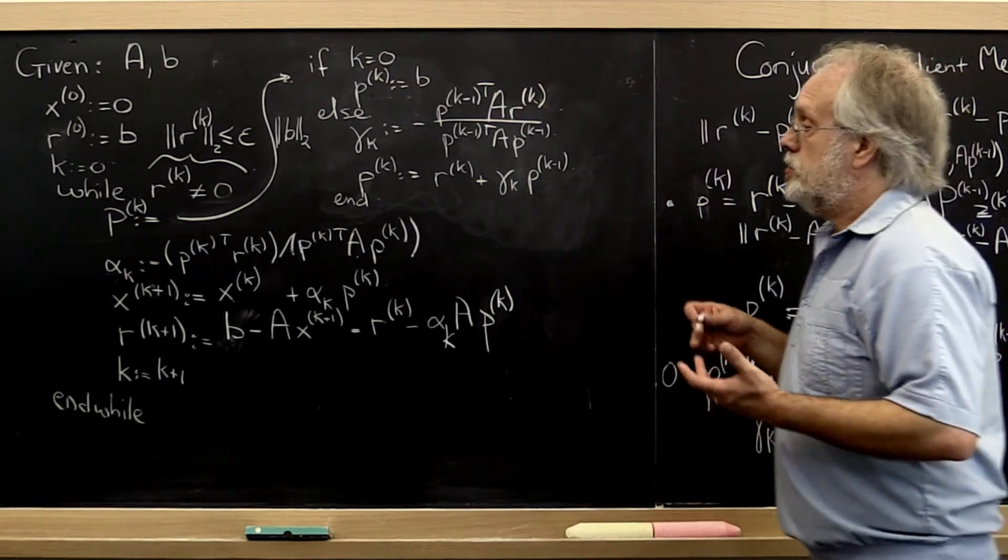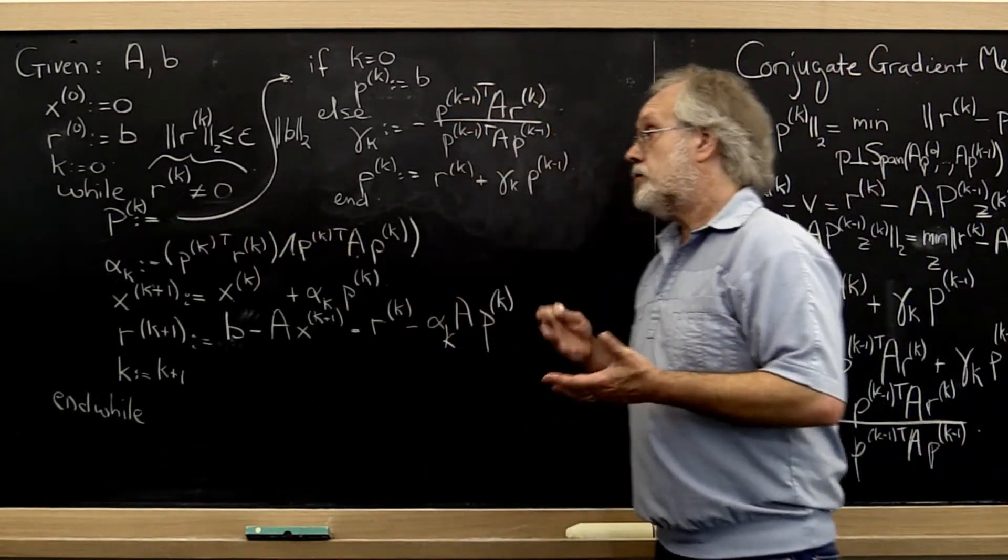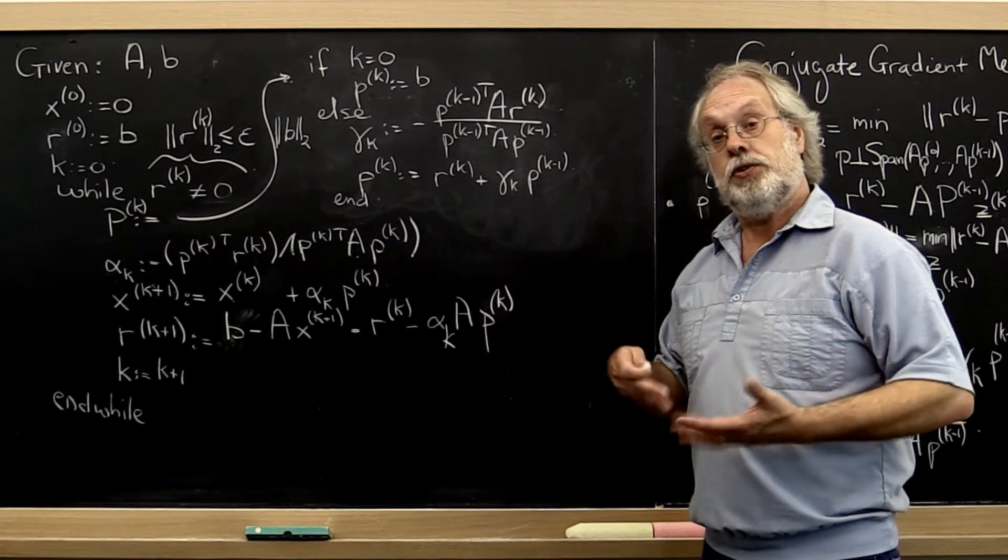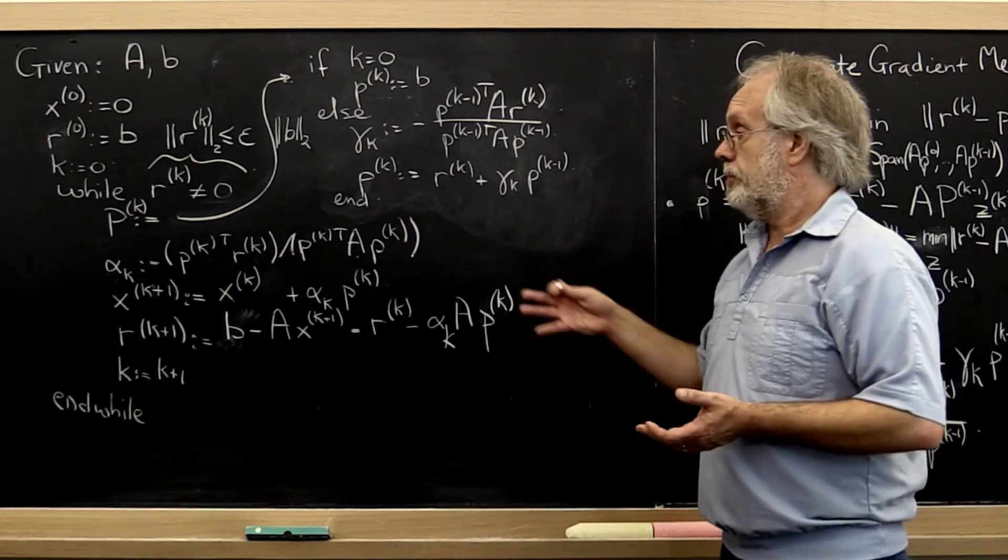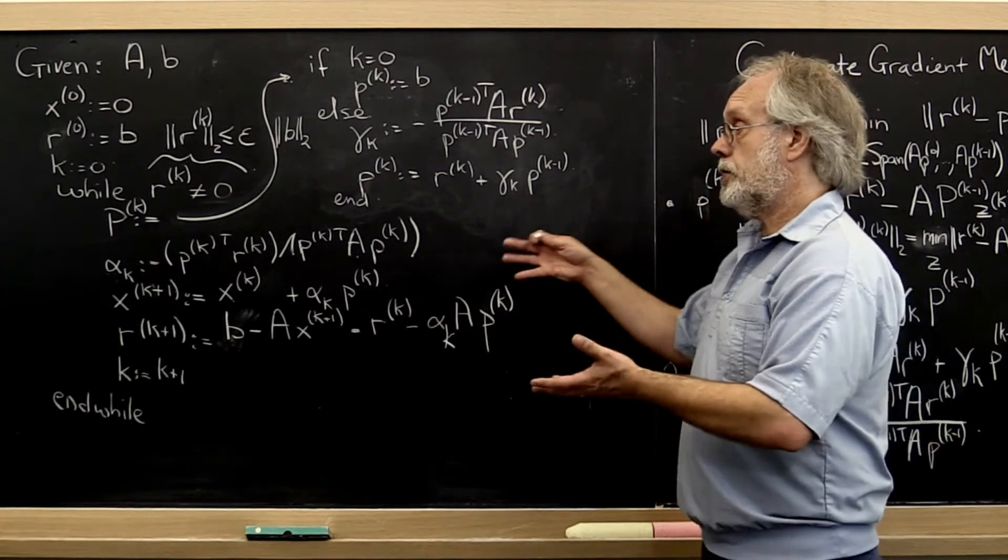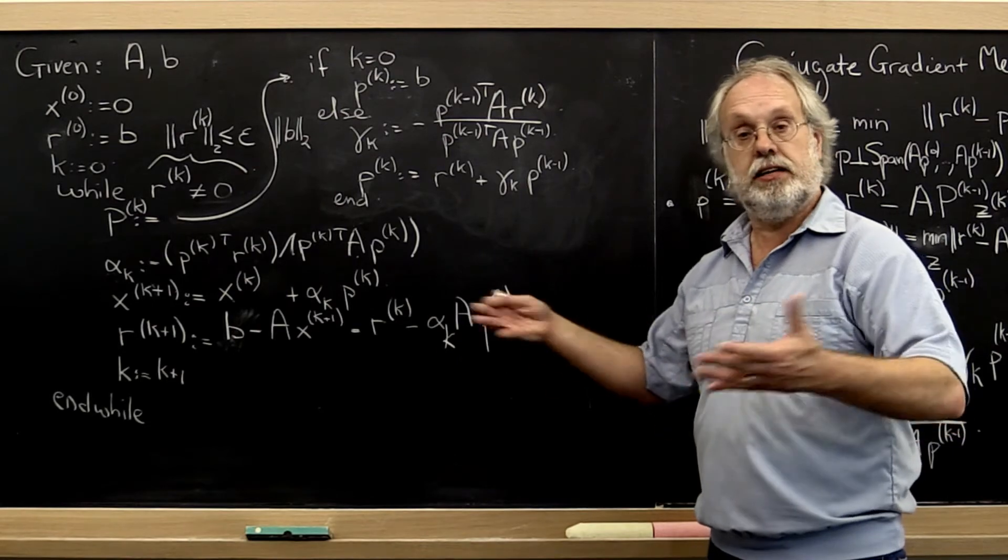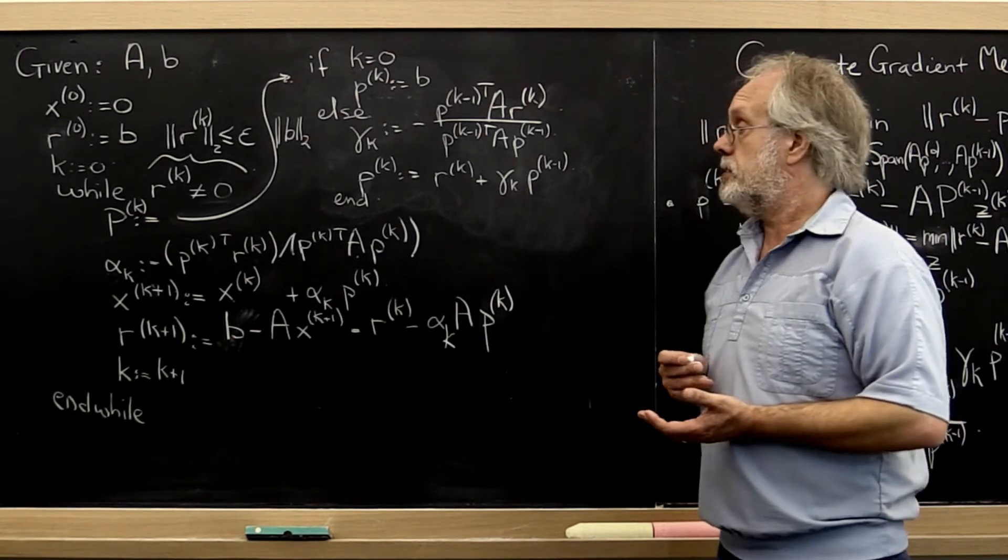And just because we pick our search directions differently now, the fact is that using a preconditioner can greatly speed up how fast we converge with the conjugate gradient method. So typically people also add a preconditioning step to this. And that works just like it did when we talked about it in the setting of the method of steepest descent.